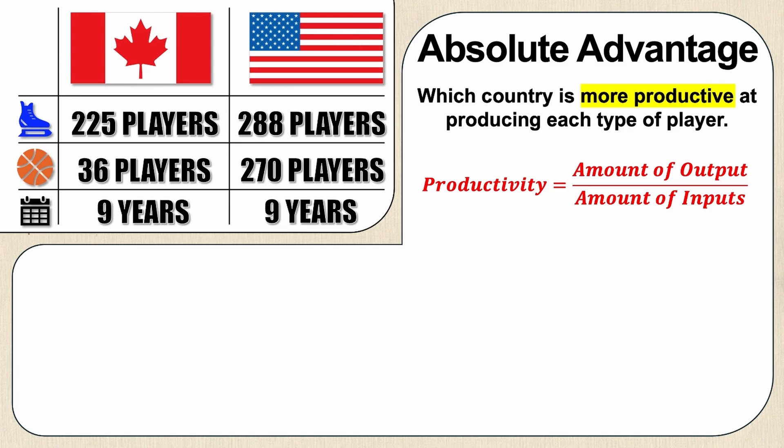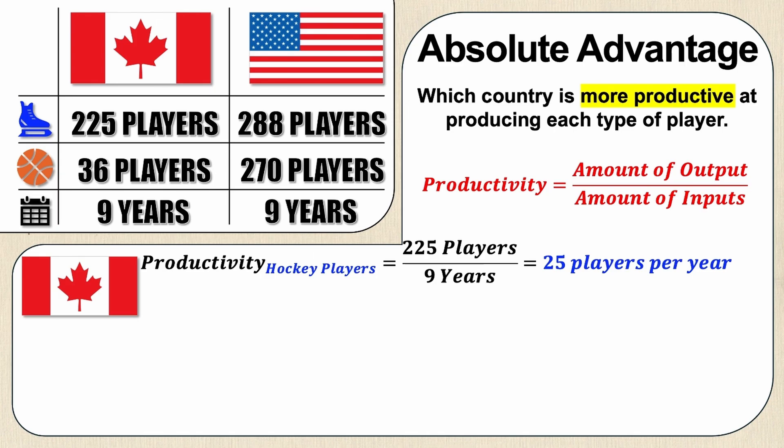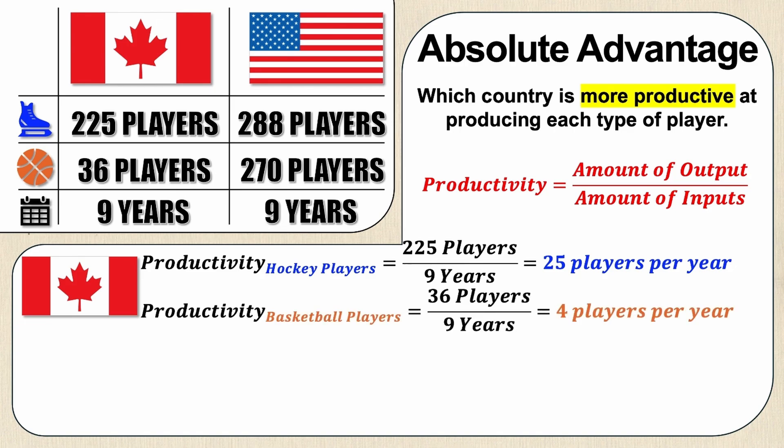Let's take a look at the productivity of Canada first. The productivity of Canada in the production of hockey players is 225 players — that's the amount of output — divided by nine years, that's the input. And this, if you do the division, is 25 players per year. What about the productivity of basketball players for Canada? Well here we have 36 players per nine years, and that's four players per year — so this is the productivity of basketball players.